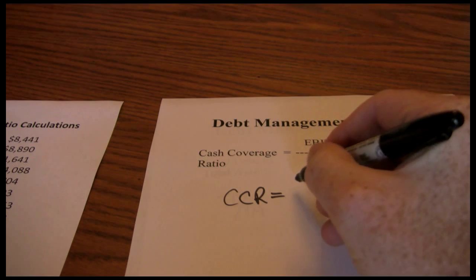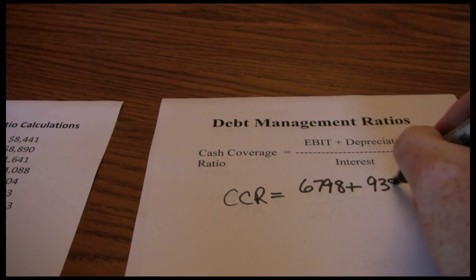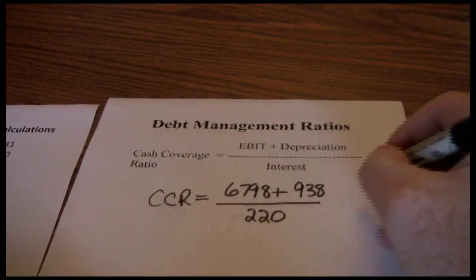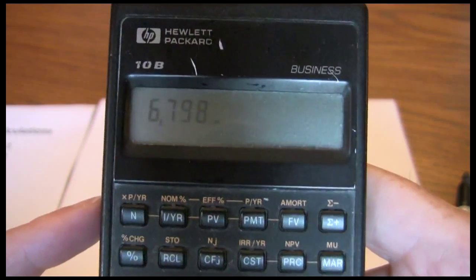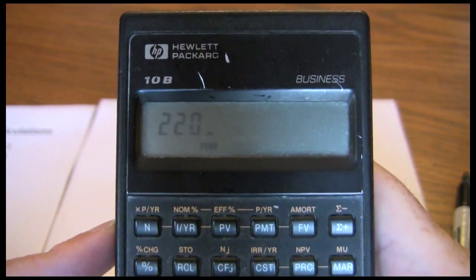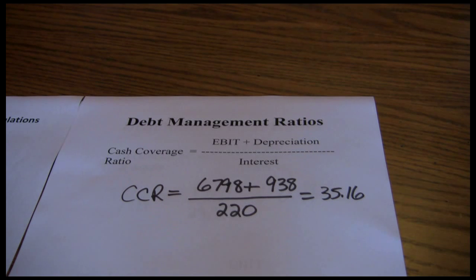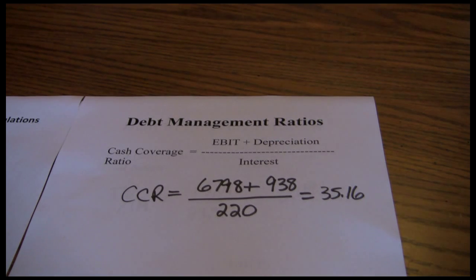So our earnings before interest and taxes are $6,798. We add back in our depreciation of $938 and divide by our interest of $220. That gives us $6,798 plus $938 in depreciation divided by $220 in interest expense, and we get a cash coverage ratio of $35.16. Again, this is a very high number, which indicates that Coca-Cola is very comfortable meeting their ongoing interest obligations. The cash coverage ratio should always be equal to or greater than the times interest earned because depreciation should never be negative. So the numerator — EBIT plus depreciation — should be larger than the numerator of just EBIT in the times interest earned ratio.